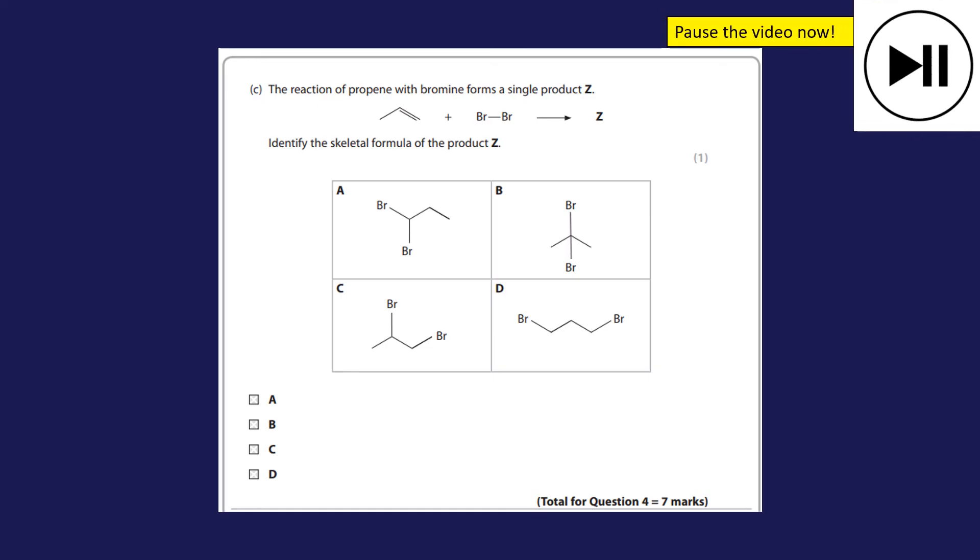Final one mark to this question then. Pause the video and then I'll go through the answer when you're ready. Propene, the reaction of propene with bromine forms a single product Z. So this is adding a halogen. What happens here is the halogen is added across the double bond, Br here and a Br here. So it's not that one, it's not that one, it's C. The answer is C. Make sure when you do your multiple choice that you very carefully put a cross in that box.